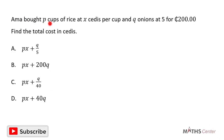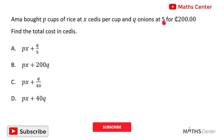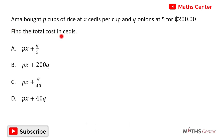Amma bought p cups of rice at X CDs per cup and kale onions at five for 200 CDs. Calculate the total cost in CDs. This is a multiple choice question, so you solve the question and after that you pick the correct option.